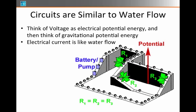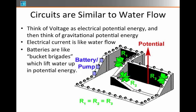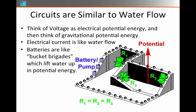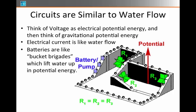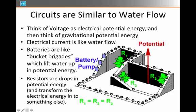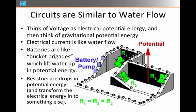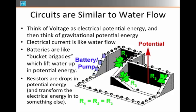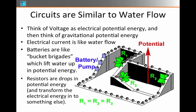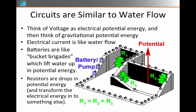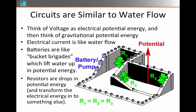The batteries are like bucket brigades that pump the water up in height, which means higher in potential energy, up to the top of the racetrack. Resistors are like drops in potential energy and transform that electrical energy into something else, the mechanical energy of the spinning little discs here. Really, in the case of electrical circuits it's heat, but it's a loss of that potential energy from gravity.